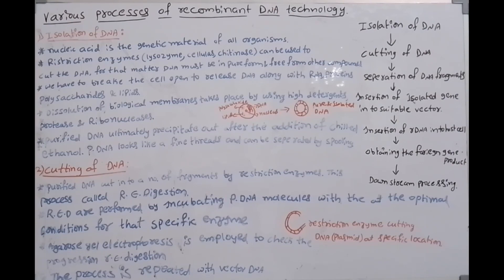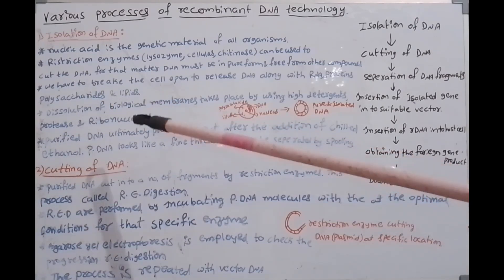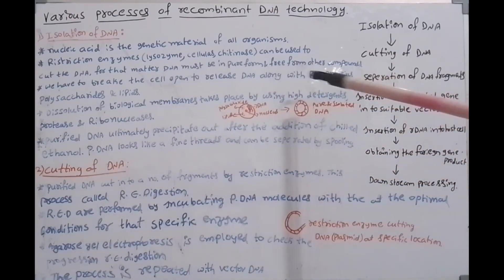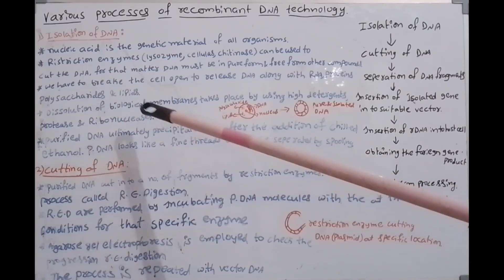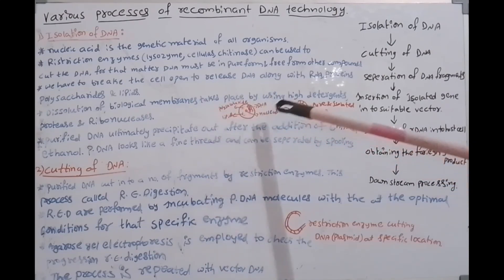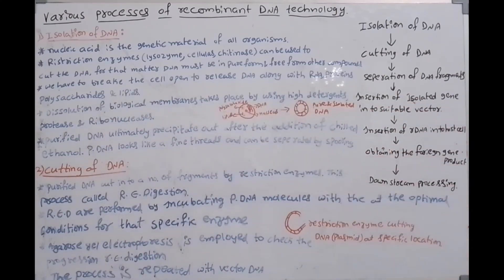The first step is to break the cell open to release DNA along with RNA, proteins, polysaccharides, and lipids. Next, dissolution of biological membranes takes place by using high detergents, proteases, and ribonucleases.